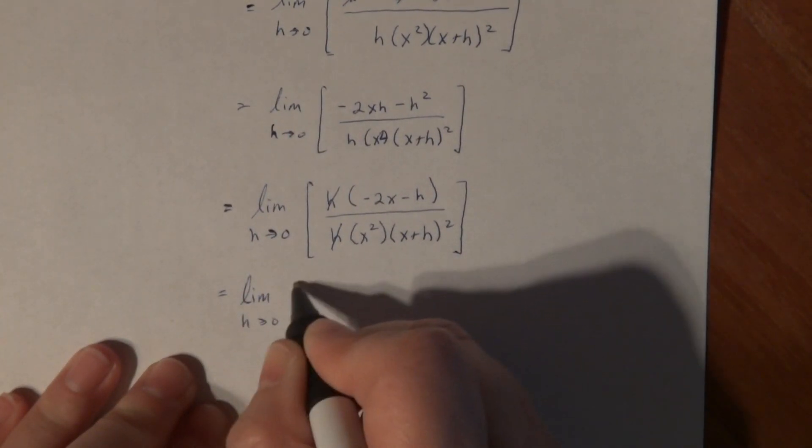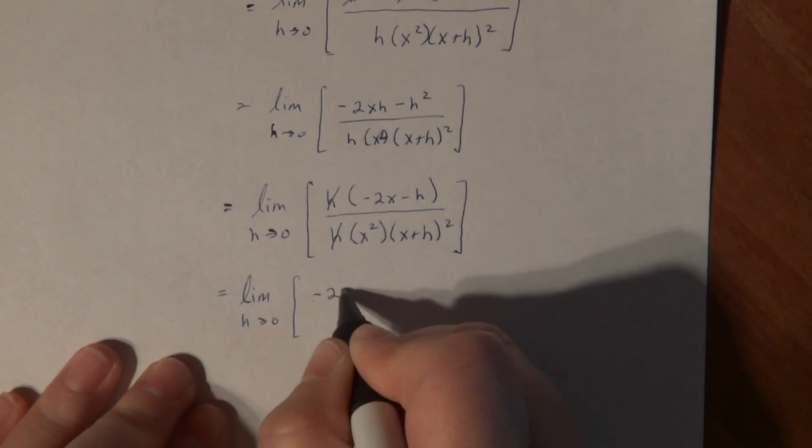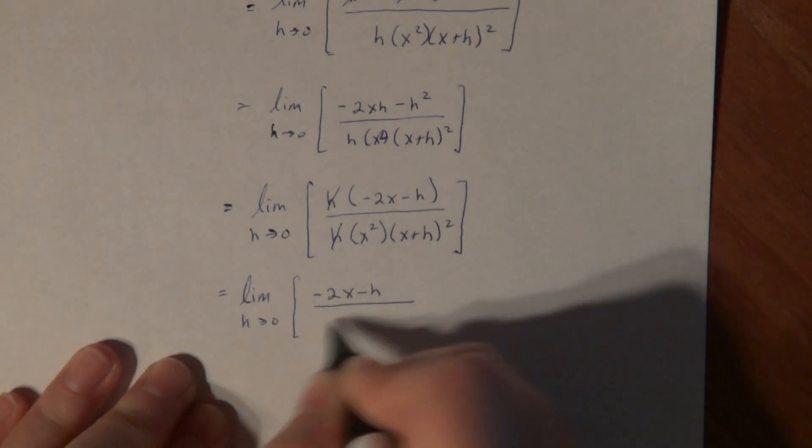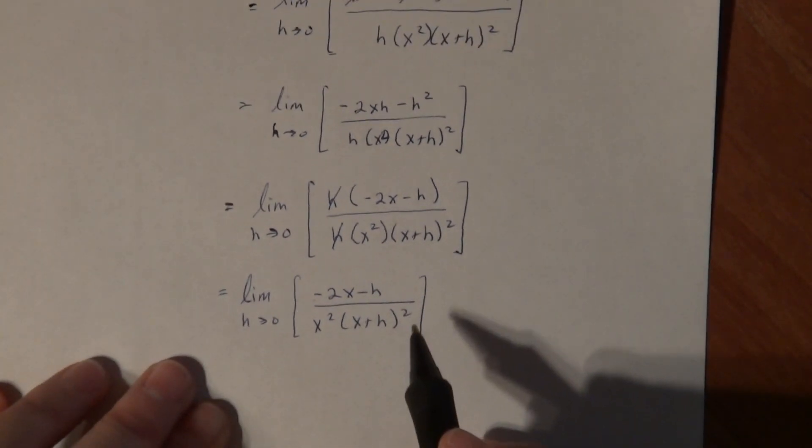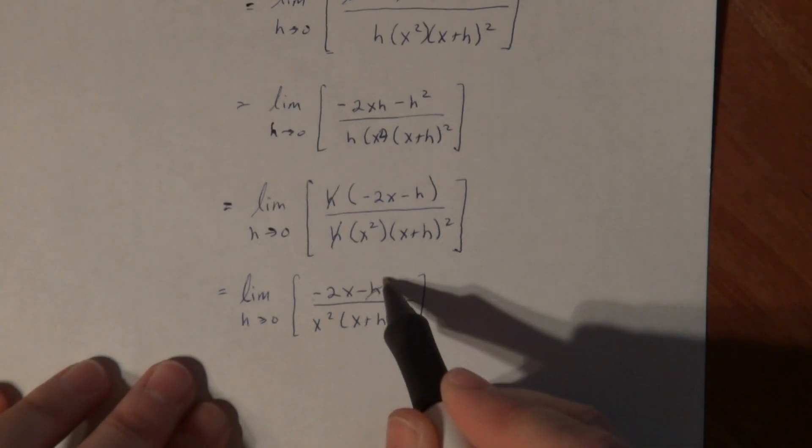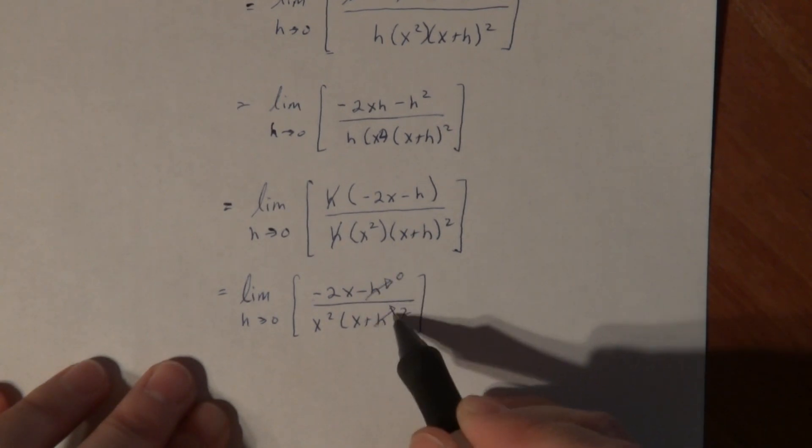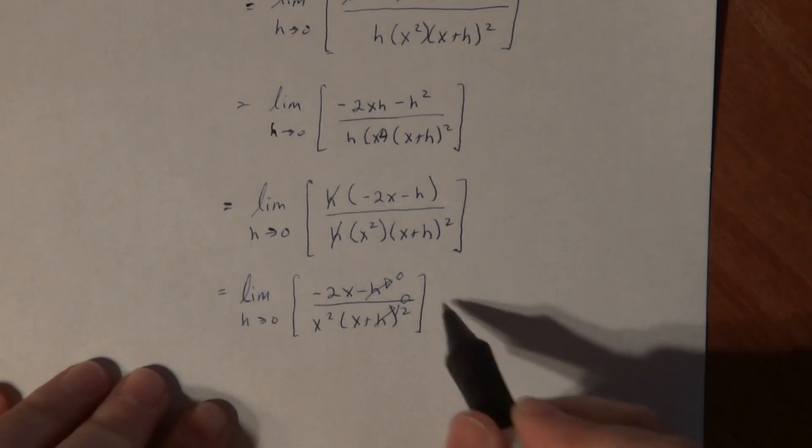Limit as h goes to 0 of minus 2x minus h over x squared times x plus h squared. Now if I take the limit and let h go to 0, that guy goes to 0, that guy goes to 0, and it looks like it's something nice.